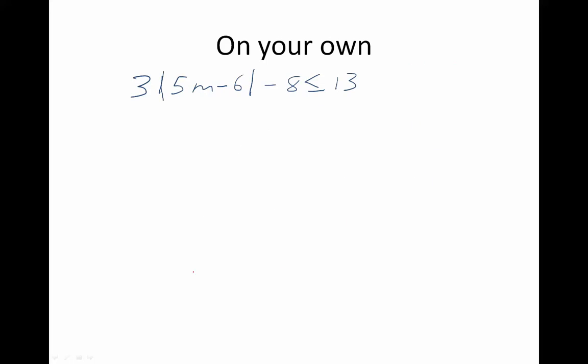Now to the second one. Oh, this was a biggie—there's a lot going on in this problem. So let's see how well you did. First of all, I need to solve for the absolute value before I do anything else. So I'm going to add 8 to both sides, leaving me with 3 times the absolute value of 5m minus 6 is less than or equal to 21.